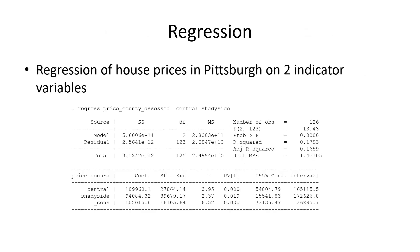If we run the regression on the price of the house as assessed by the county on these two indicator variables, we see that both of them are significant and both of them have a plus sign. So if you have central air conditioning, you have a higher house value on average. And if you live in Shadyside, you have a higher house value on average too.